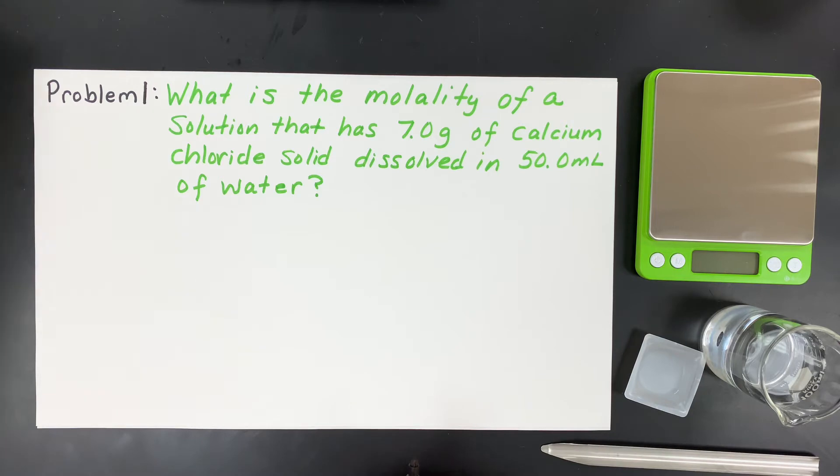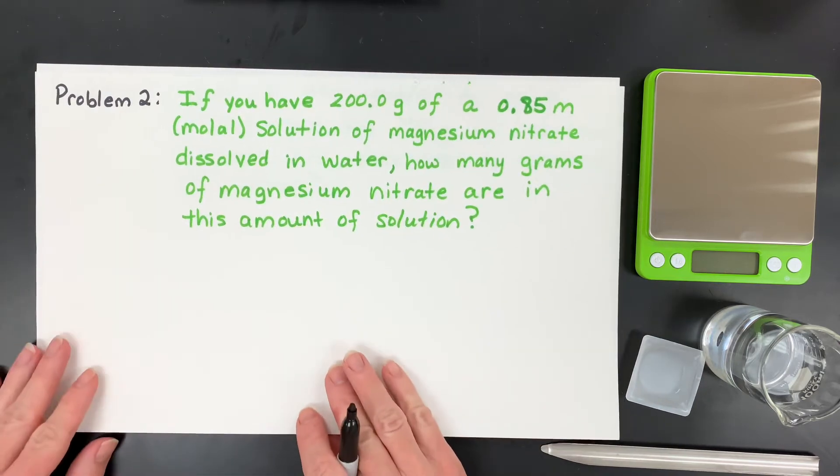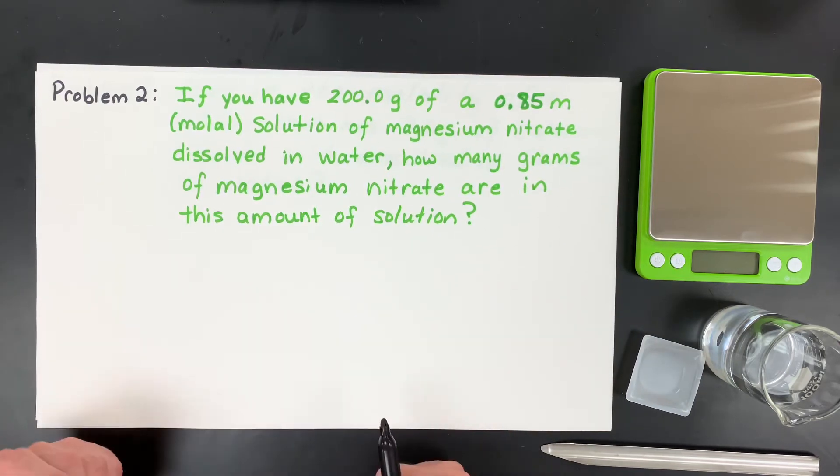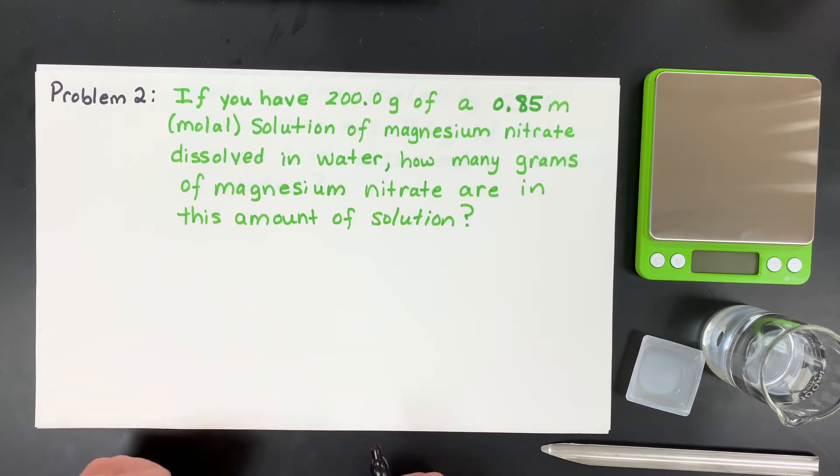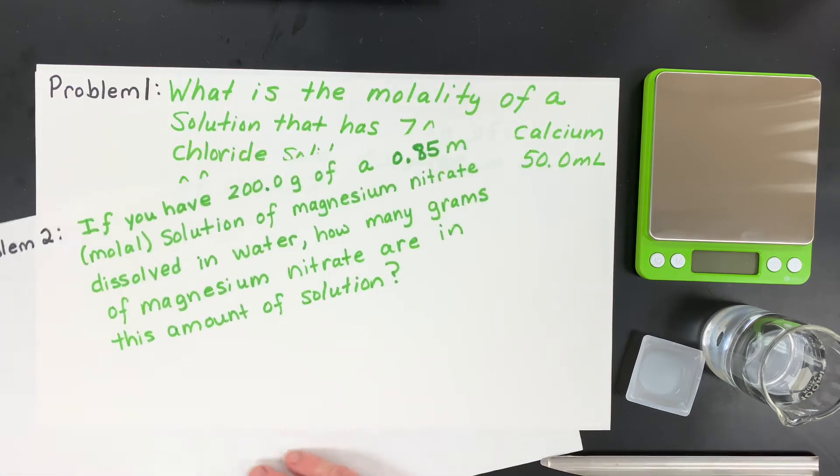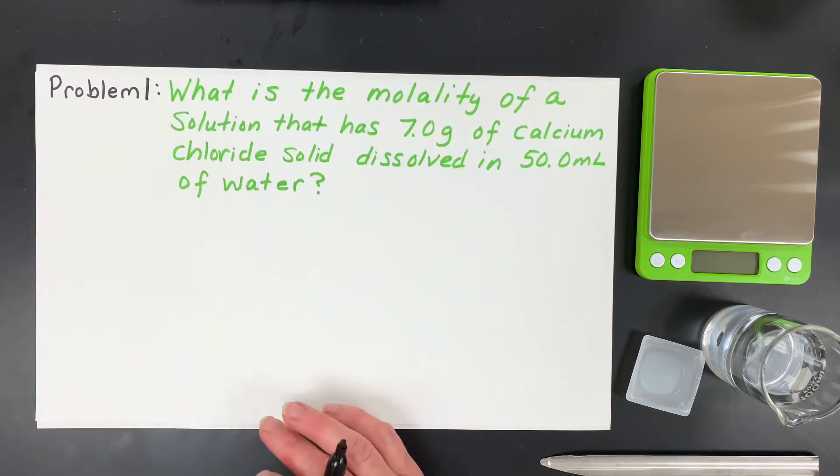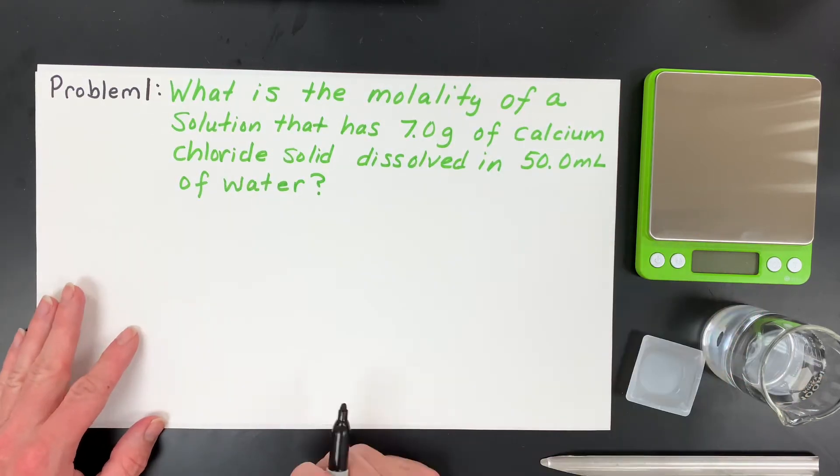Once that's done, we will do a little harder problem, which is this one, and we'll solve for a different kind of variable, which is how many grams of the solute are in a certain mass of solution. Let's get started with a standard problem, and let's work it first before we even make the solution.